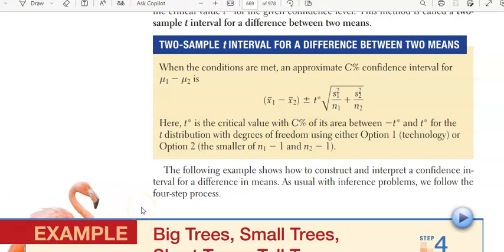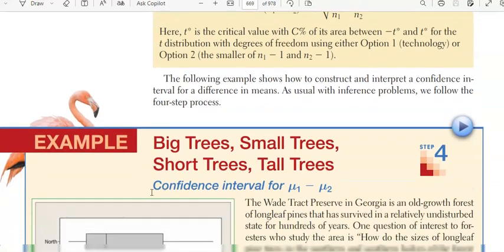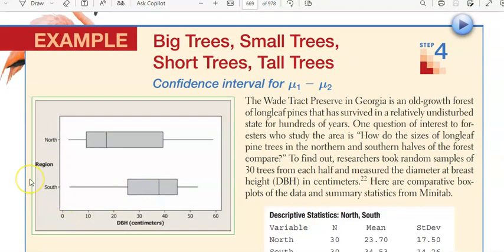So the next example shows how to construct a confidence interval for the difference of two means. This example deals with big trees and small trees, short trees and tall trees. The Wade Tract Preserve in Georgia is an old growth forest of longleaf pines that have survived in a relatively undisturbed state for hundreds of years. To find out, the researchers took a random sample of 30 trees from each half and measured the diameter at breast height (DBH) in centimeters.